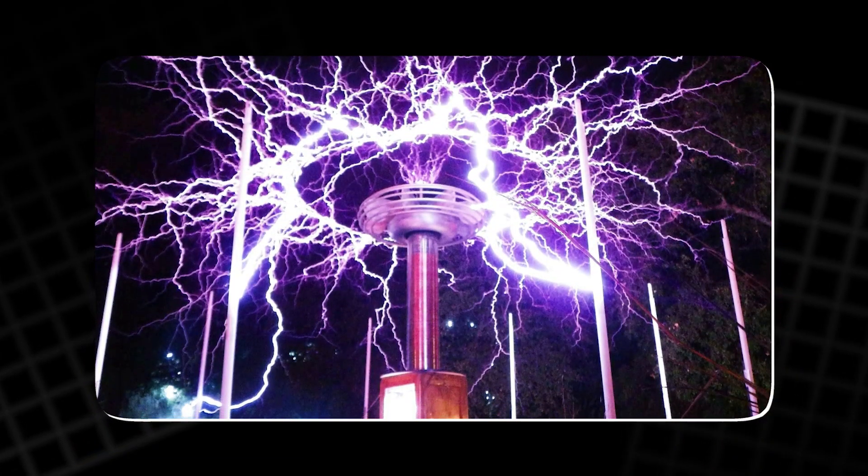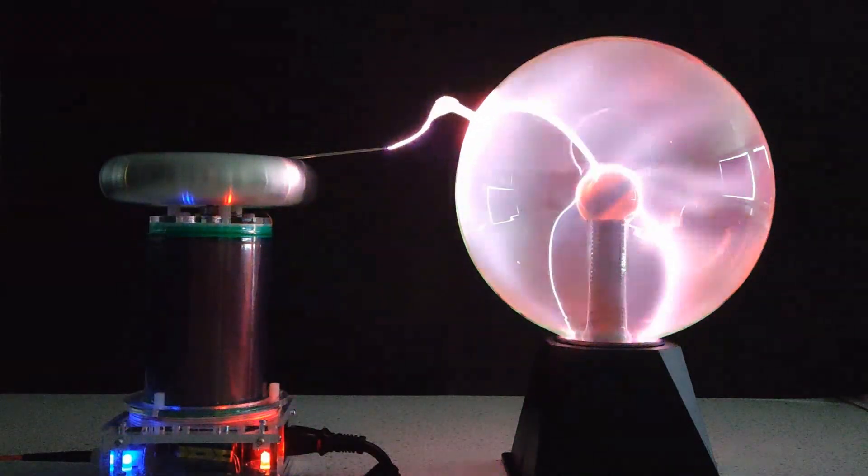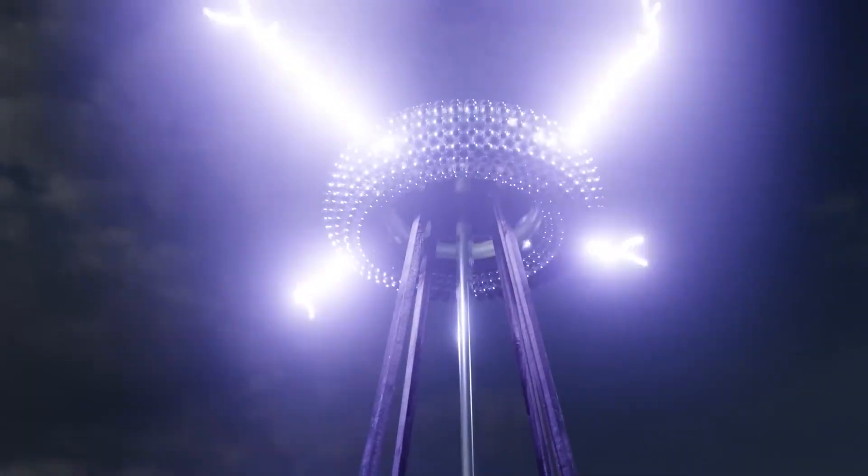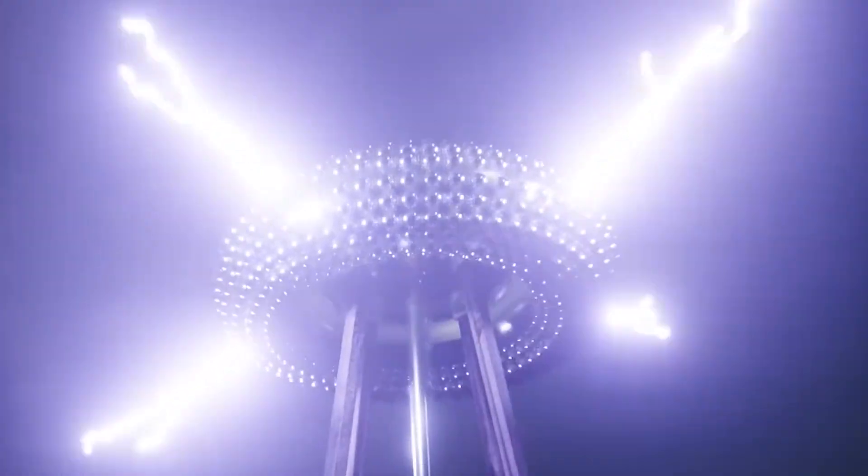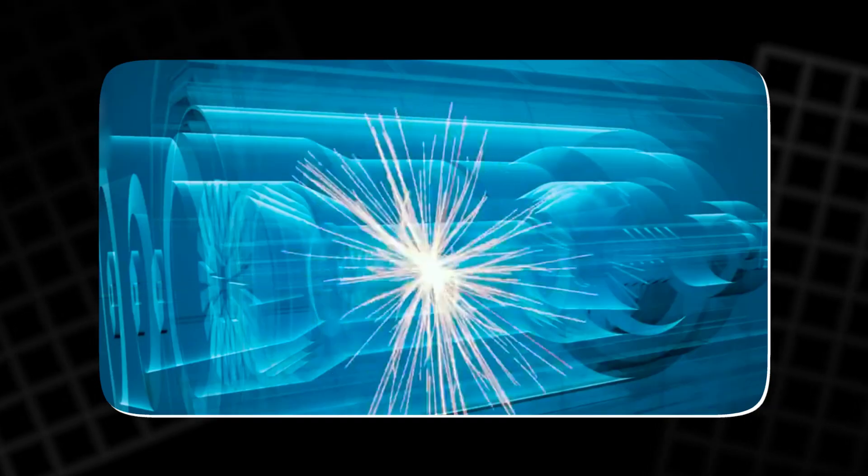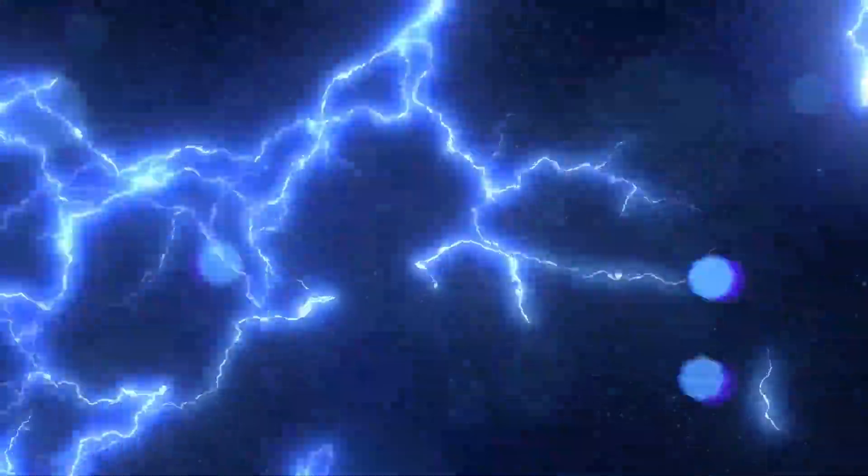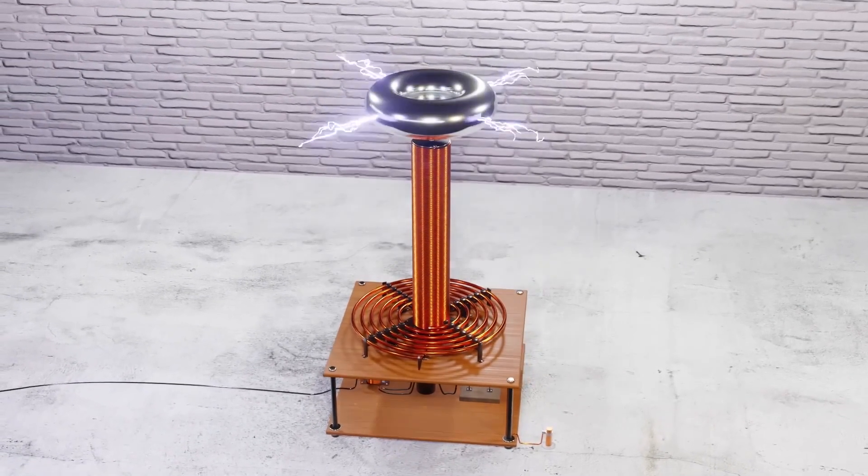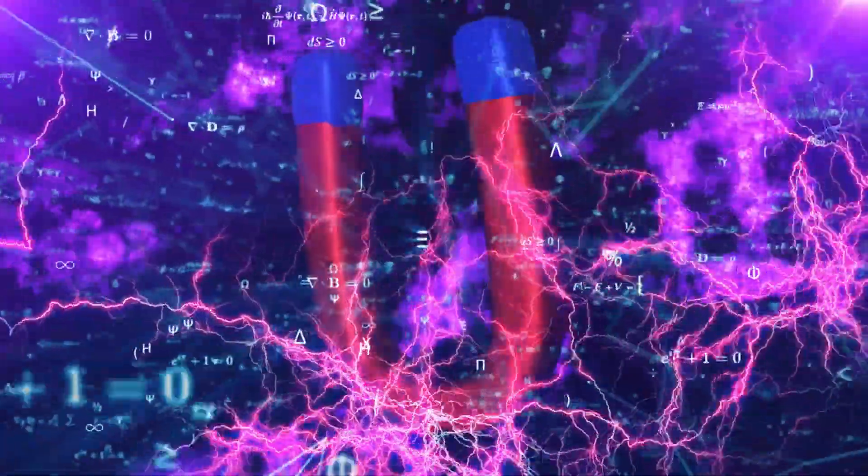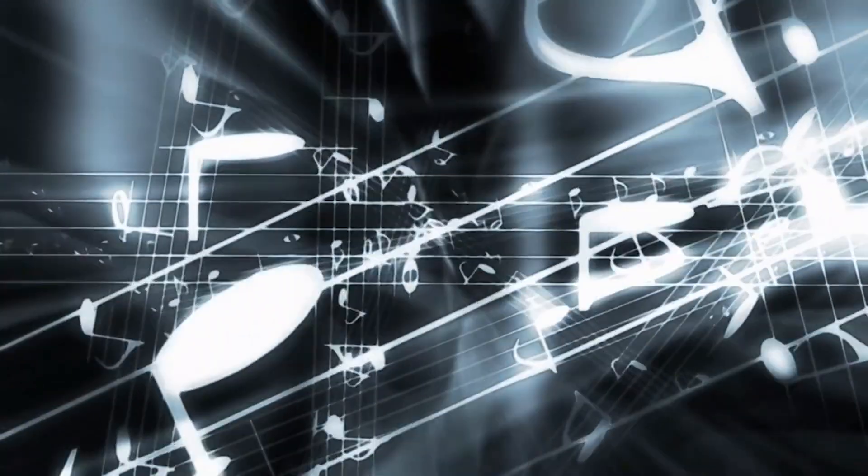Tesla coils, apart from producing these brilliant displays, also demonstrate the principles of electromagnetic induction and resonance. Inside the coil, alternating current rapidly builds up a high voltage, often reaching hundreds of thousands of volts. The coil's secondary winding is designed to create resonance, amplifying the voltage to the point that it ionizes the surrounding air. This is what causes the characteristic electrical arcs and sparks that leap from the coil's tip. When a glass tube containing a noble gas is brought near the coil, the emitted electromagnetic energy excites the gas inside without any physical connection. The result is a bright, colorful glow that seems to float in mid-air, driven purely by invisible forces.